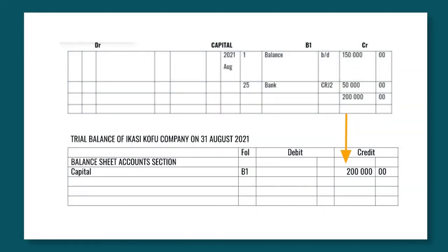Let's use the example of the general ledger from the previous lesson and draw up the trial balance for Ikasi Kofu Company for August 2021. The first account will be the capital account. The balance from the general ledger will be posted on the credit side of the trial balance in the balance sheet account section, as mentioned earlier.